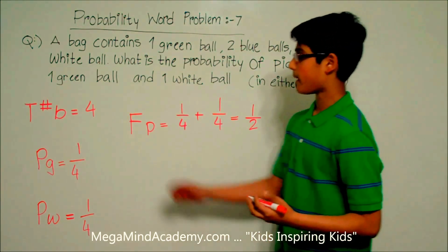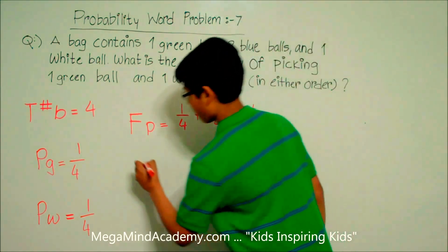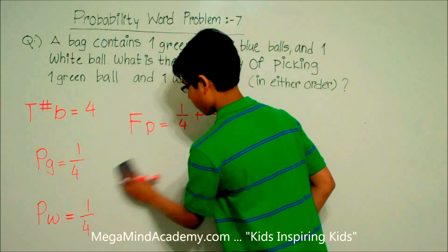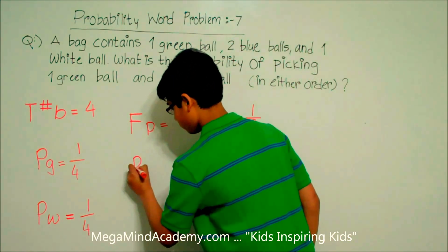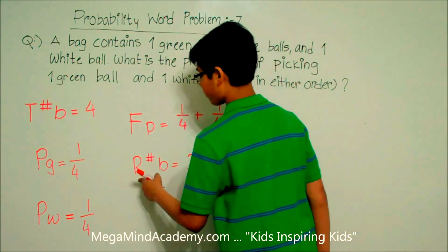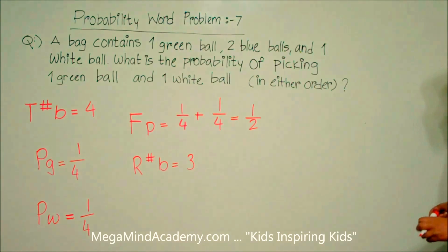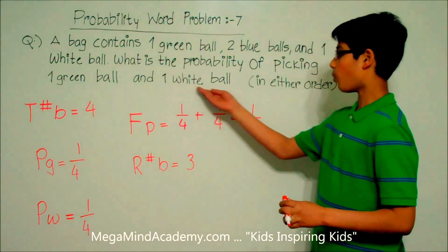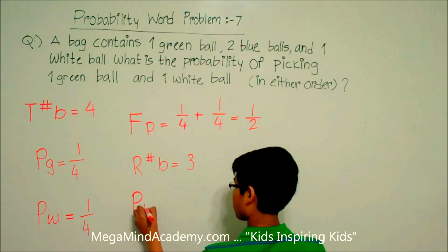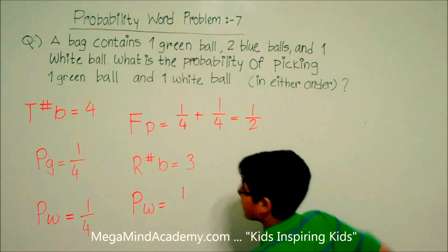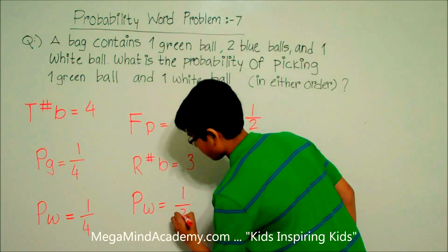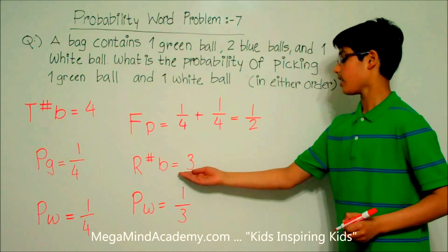Now let's say we picked the green ball. That means the remaining number of balls (R.B.) is equal to three. We now have to pick the one white ball as our second pick, so the probability of picking the white ball is now one third, because there is one white ball remaining out of three balls.